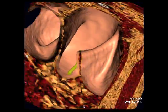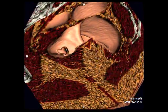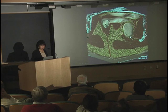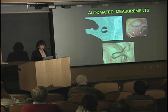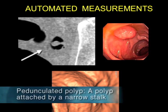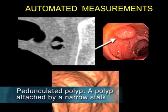We measure the size of the polyp really easily. This is another polyp — a pedunculated polyp — and this is what it looked like on the colonoscopy. If we do find a large enough lesion, we will send the patient on to the traditional colonoscopy to get it taken out.